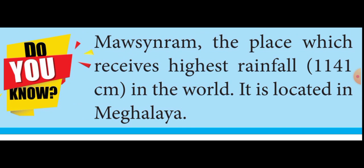Now I will revise some one-word questions. Western disturbances cause rainfall in Punjab. Mango showers help in quick ripening of mangoes along the coast of Kerala and Karnataka. A line joining places of equal rainfall is called an isohyet.